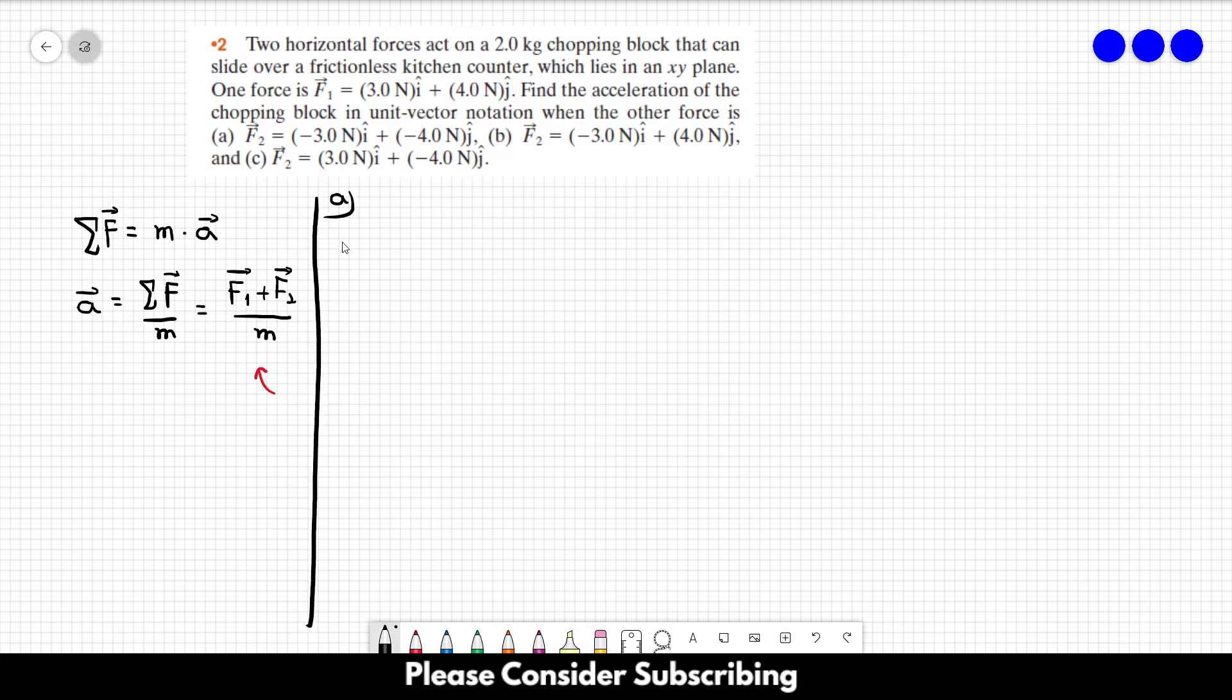So in letter A, let's sum the forces first. So F1 plus F2 is equal to three in the i direction plus four in the j direction minus three in the i direction minus four in the j direction. So you can see that this three over here cross with this one, and this four cross with this one.